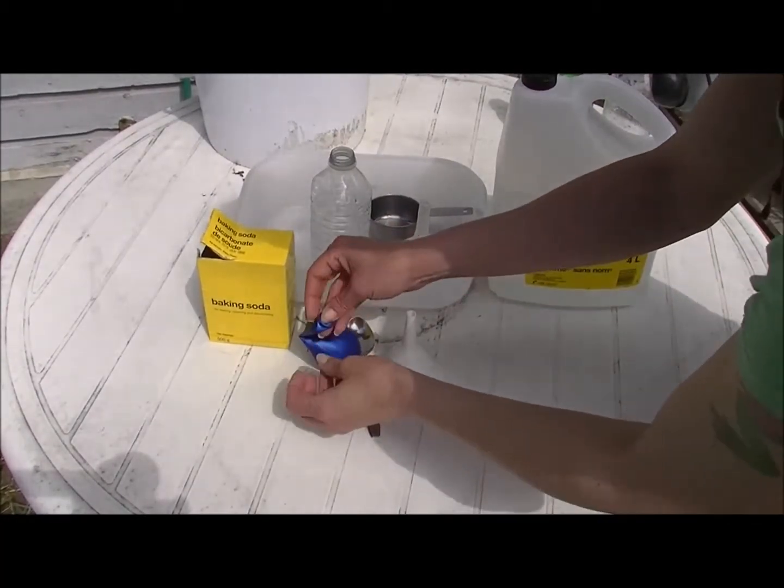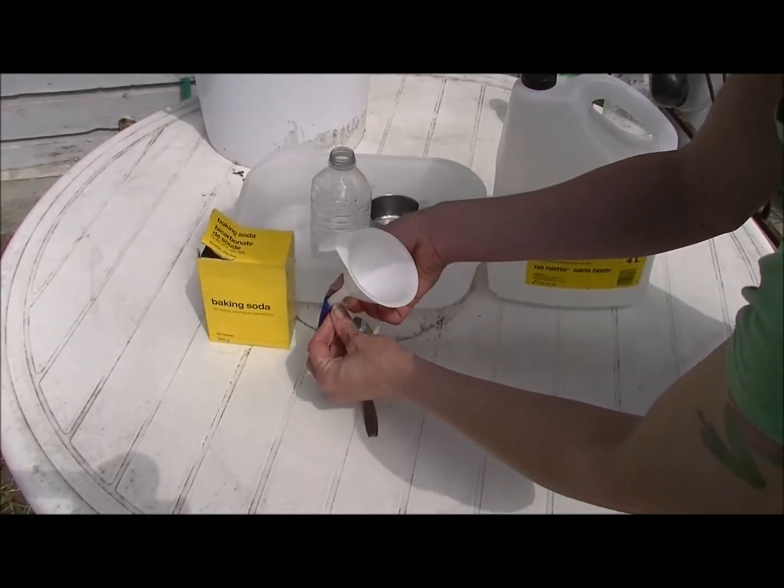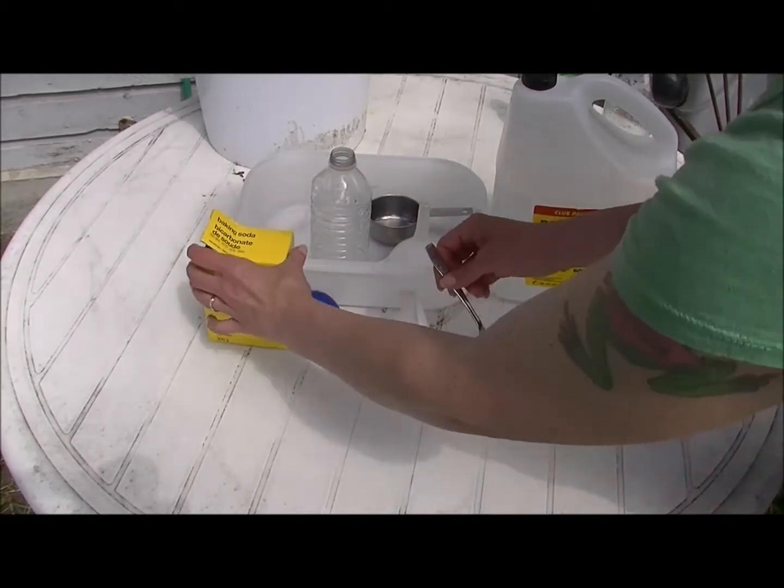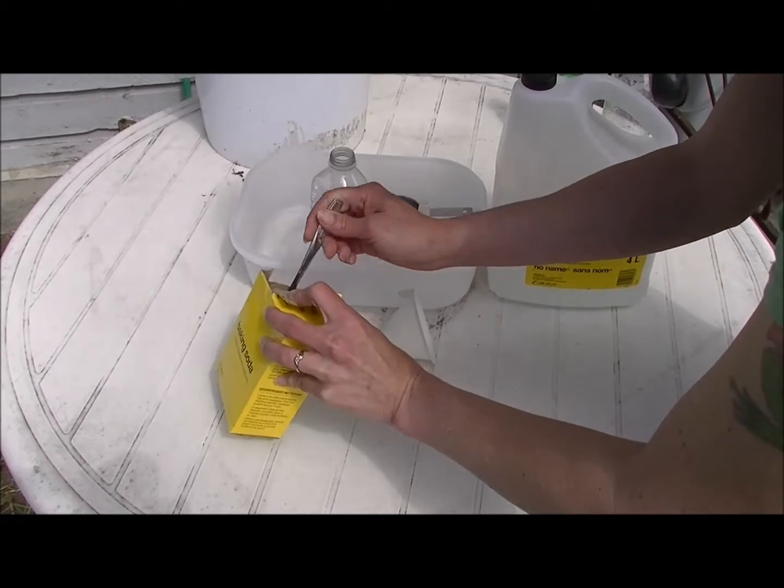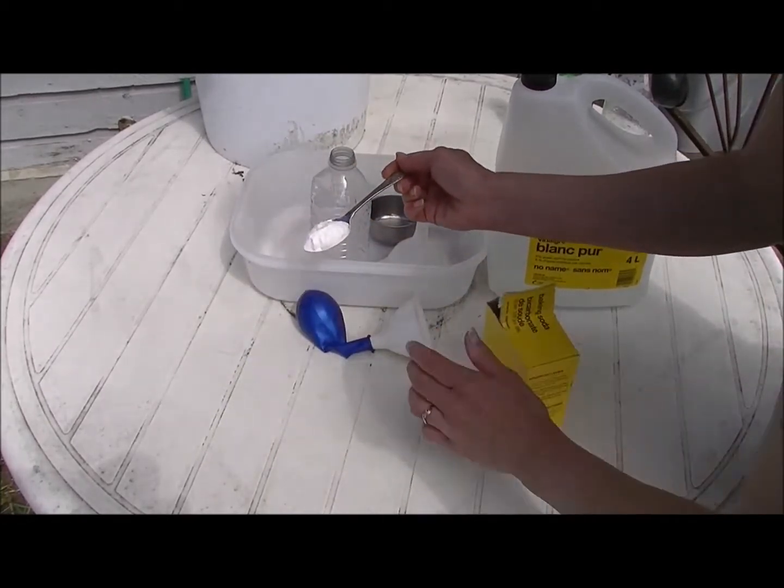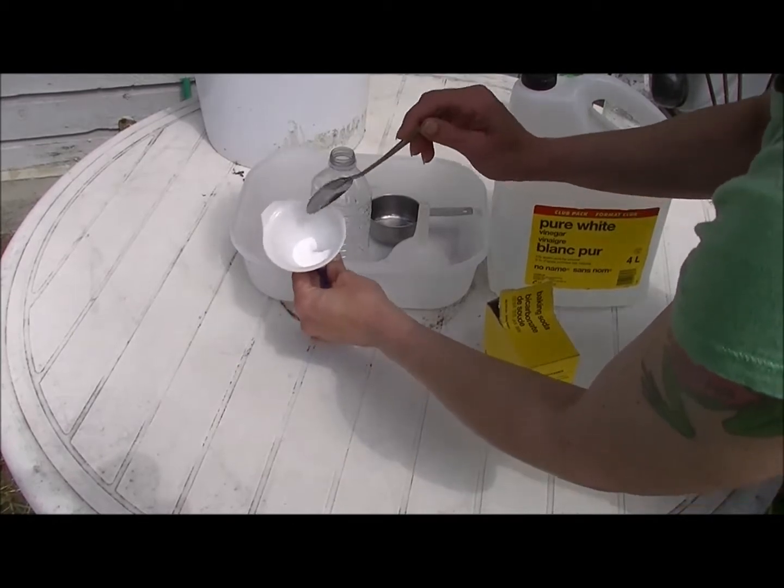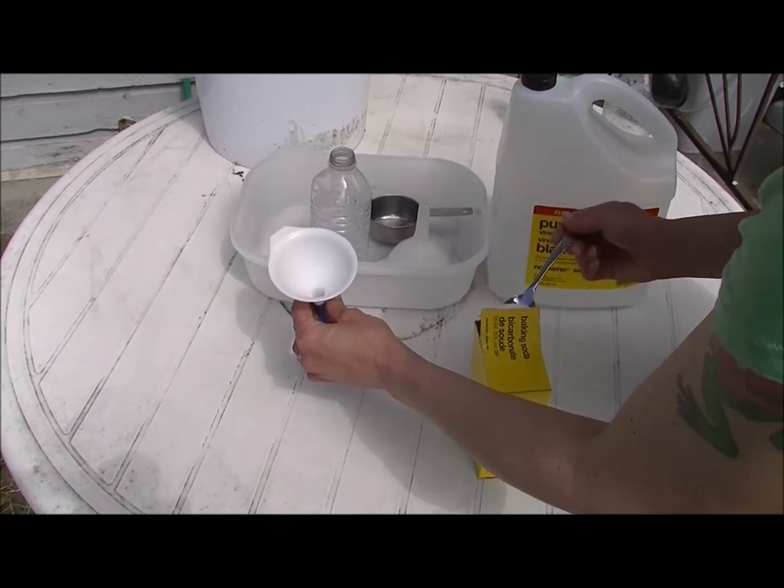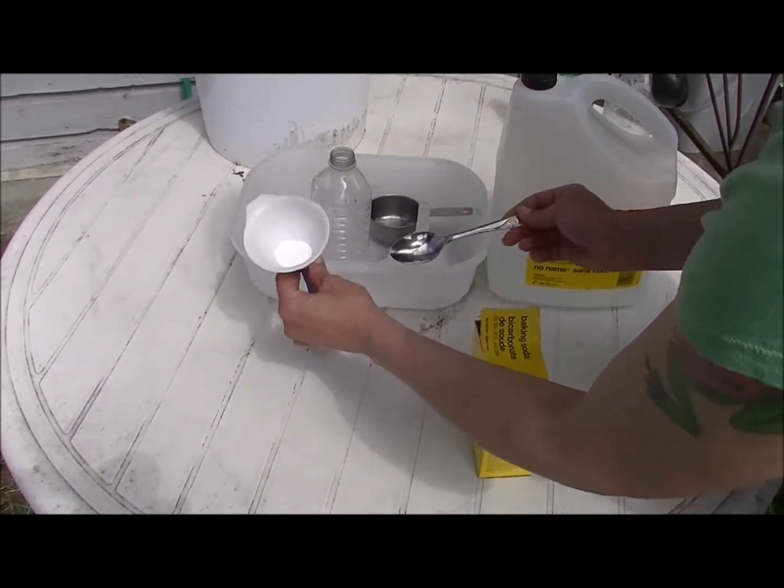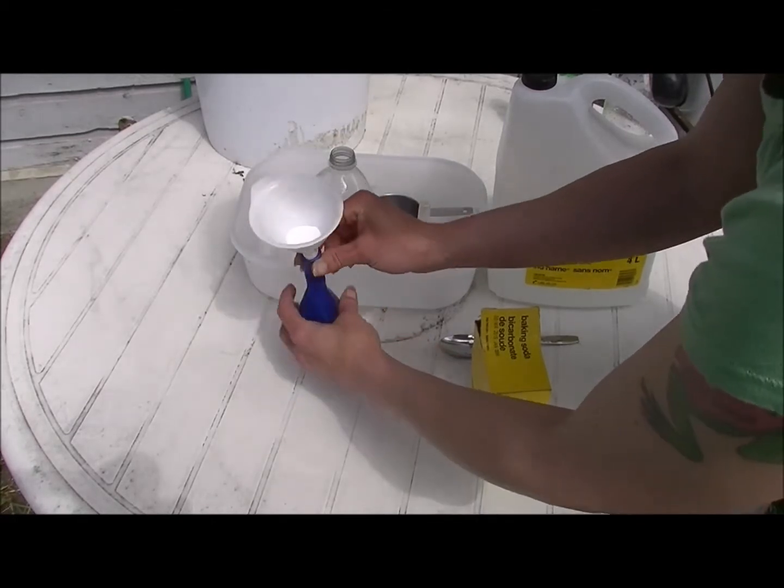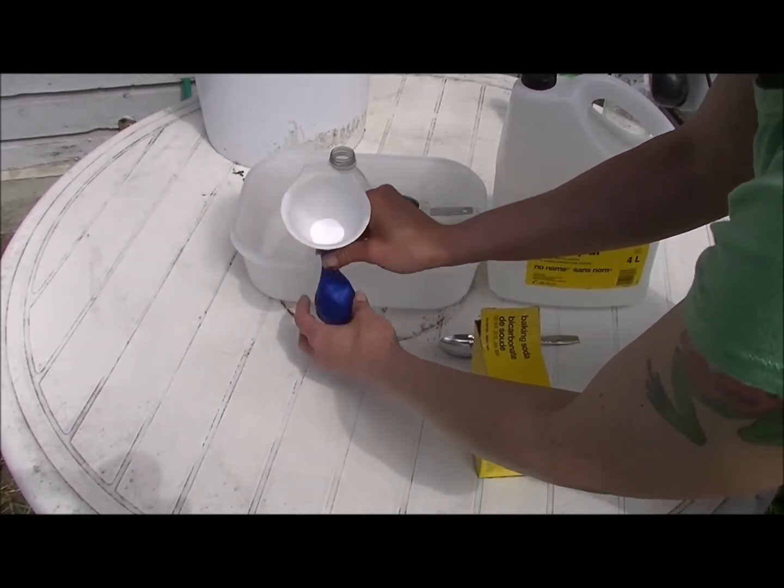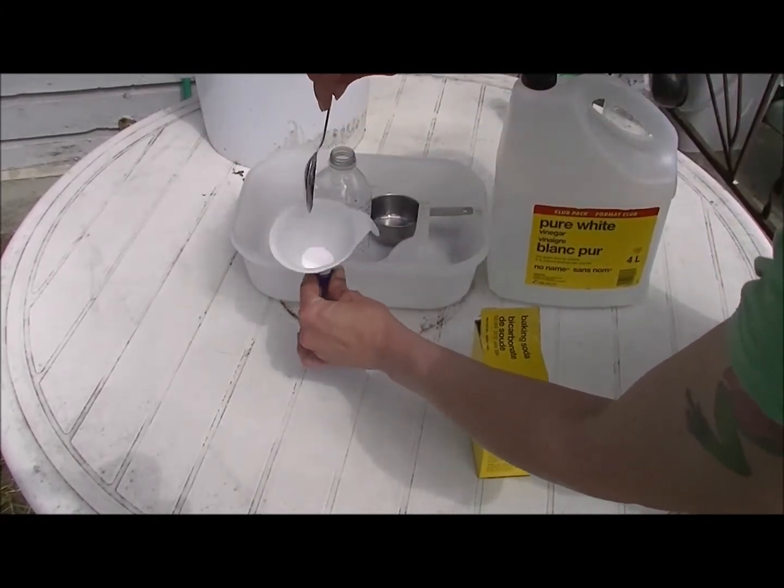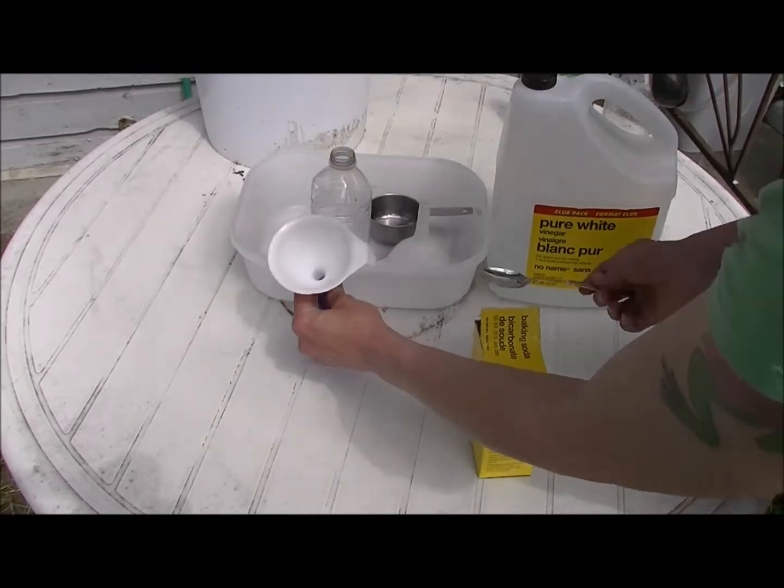Alright, so we've got the balloon here, just going to stick the funnel into the opening and then just going to put in two teaspoons here of this baking soda, kind of tap it around so it goes down. There we go. Get in there. Sometimes there's air so it won't go. There we go. Now that's in there, we're going to set that aside.